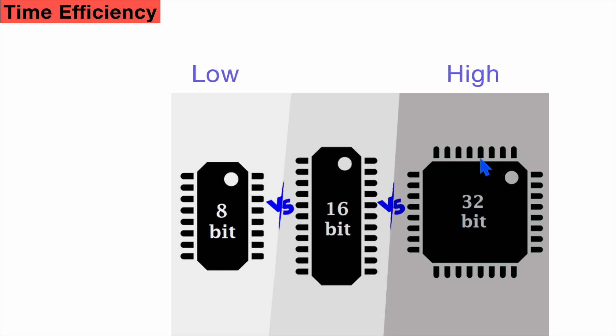But if we see from the power efficiency, as 8-bit microcontroller is fetching only 8 bits at any moment, while the 32-bit microcontroller will have to fetch 32 bits at a time. So it will take more power.